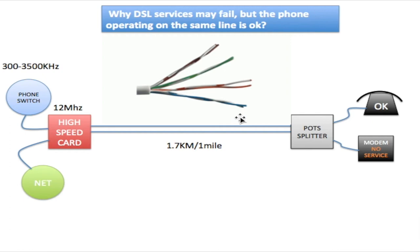This continues forever — this is how the phone is currently working and how it is supposed to work. Everything is fine with the phone, but the modem is not working. The line is not performing the way it needs to in order to get the signal through to the modem.